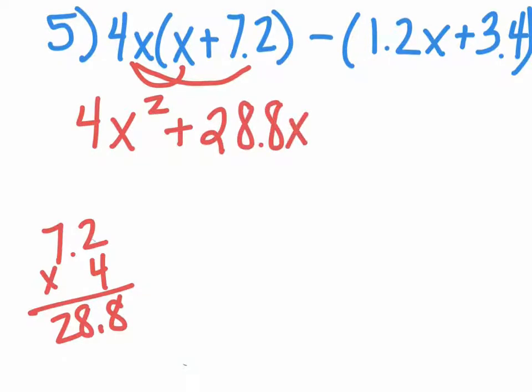Now we're going to go over to the second portion, where it says negative parentheses (1.2x + 3.4). We're going to put a 1 in here, because when there's nothing out there, you need to put a 1—it's an understood 1.